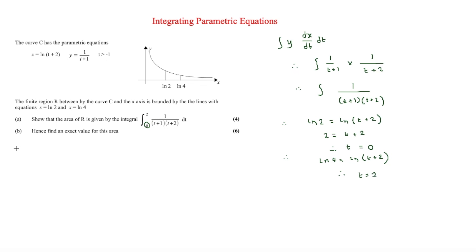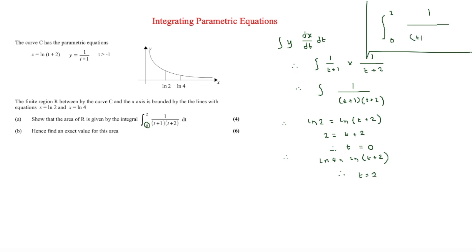Therefore the integral becomes the integral from 2 to 0 of 1 over (t plus 1)(t plus 2), which matches exactly what the question asked us to show.